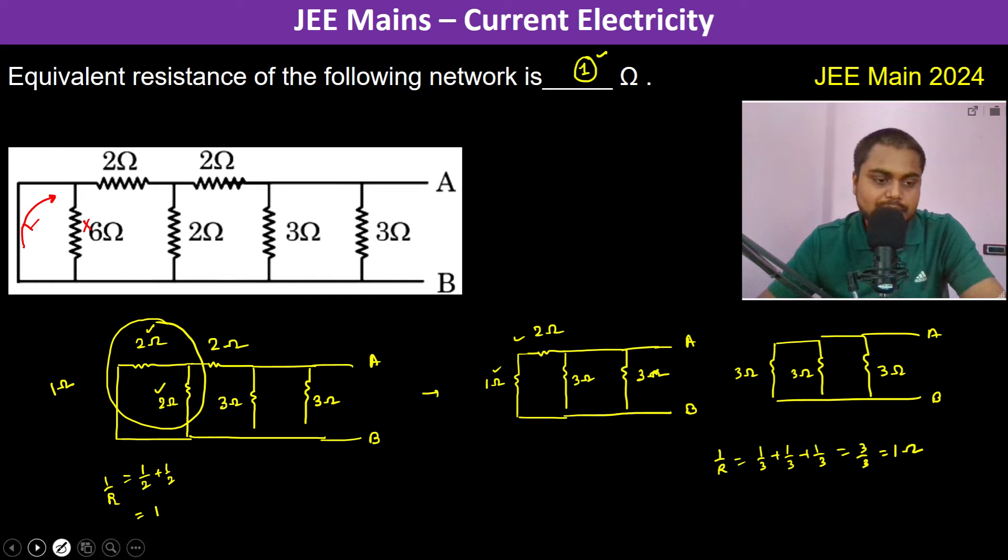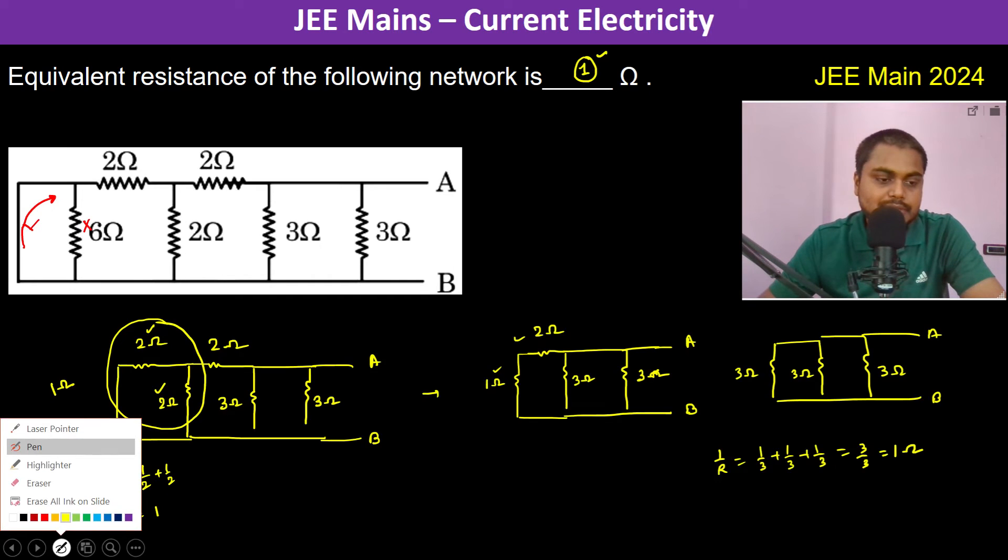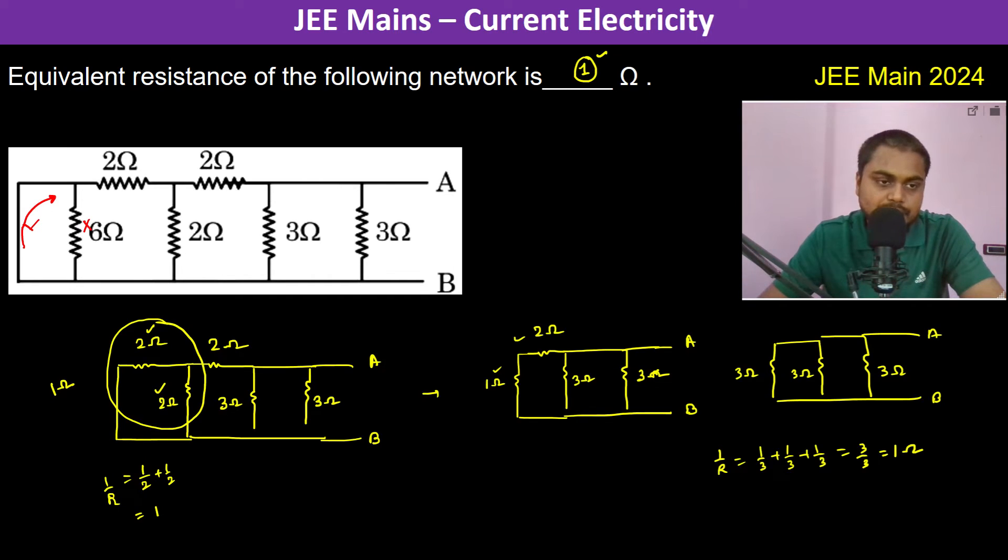So what we have done here is that we have neglected the 6 ohm resistance. So therefore it becomes, 6 ohm is gone, so 2 ohm, 2 ohm ke saath there is this short circuit. So now this 2 ohm and this 2 ohm they both go in parallel, so therefore this reduces to 1 ohm.